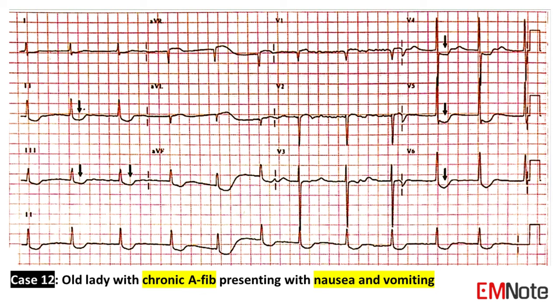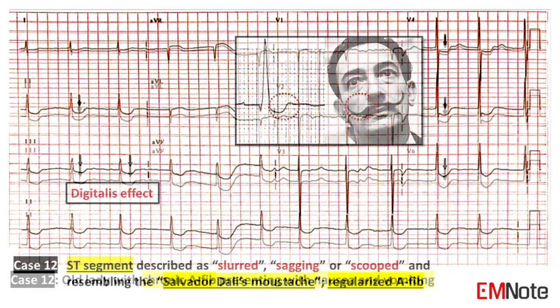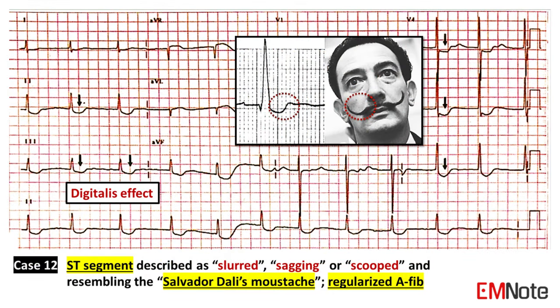Case 12: The patient is an elderly woman with chronic atrial fibrillation presenting with nausea and vomiting. Regularized atrial fibrillation and sagging of ST segments, which resembles Salvador Dali's mustache, are ECG findings compatible with digitalis use. The patient's GI upset is likely due to digoxin overdose.